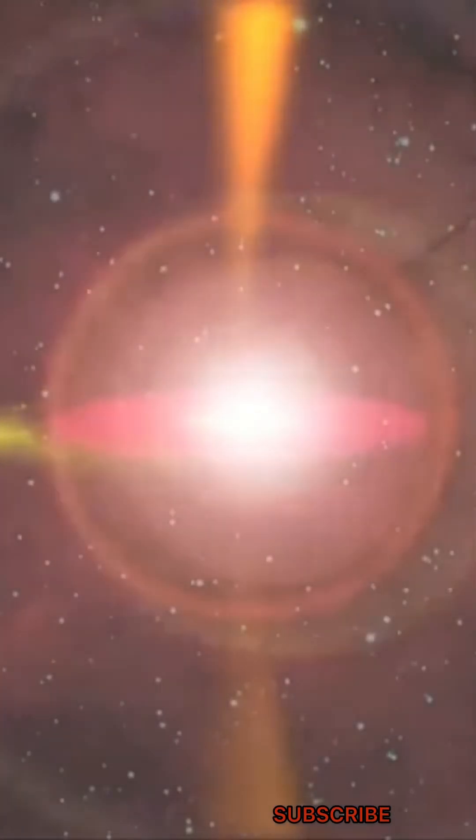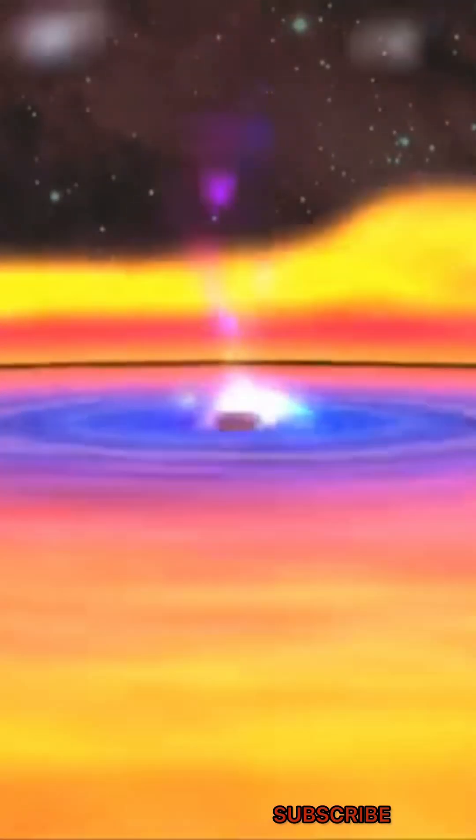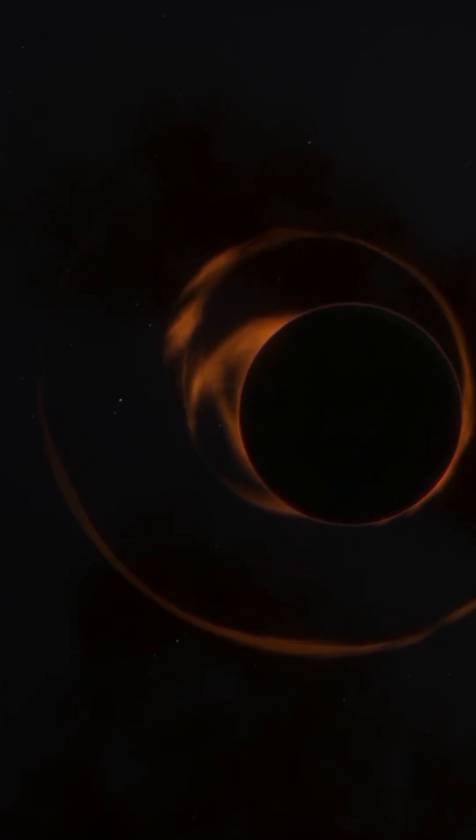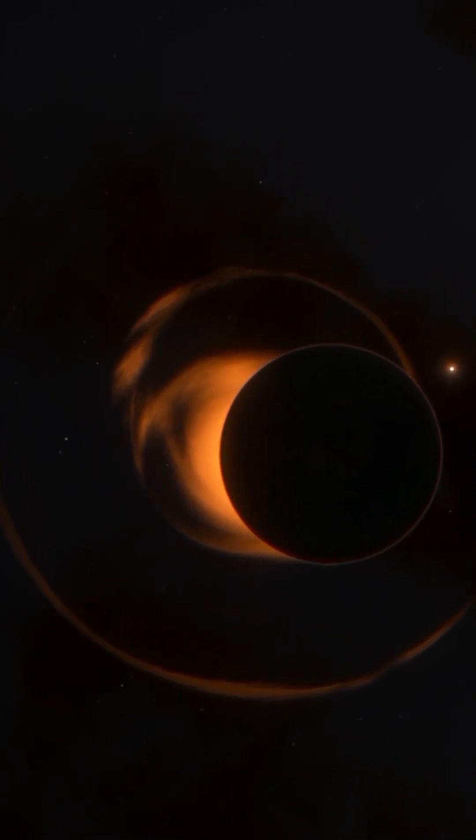Formed from the remnants of massive stars, black holes have a gravitational pull so strong that once something crosses the event horizon, it cannot come back. Time behaves differently near a black hole due to its intense gravity.